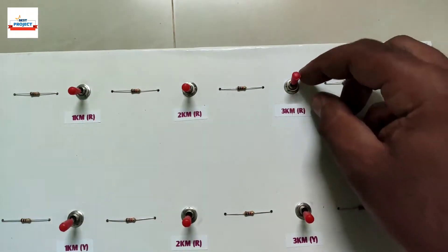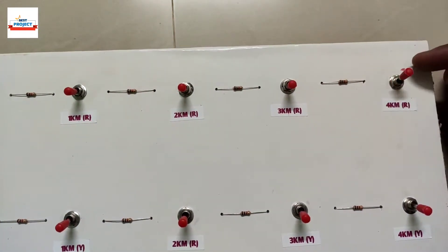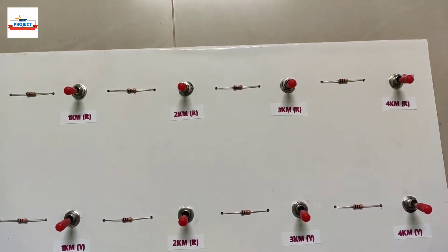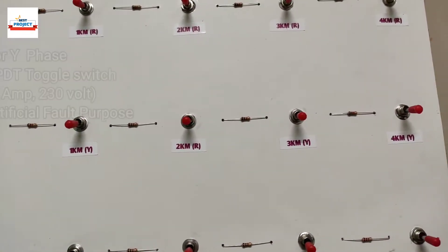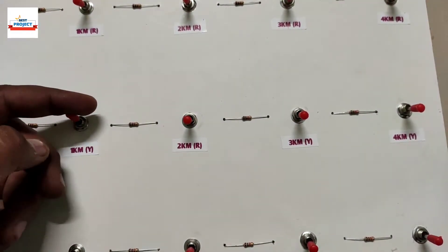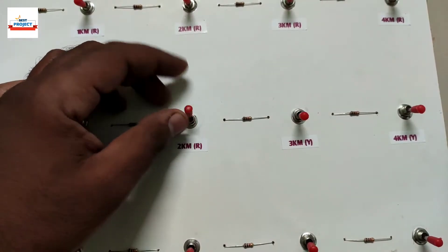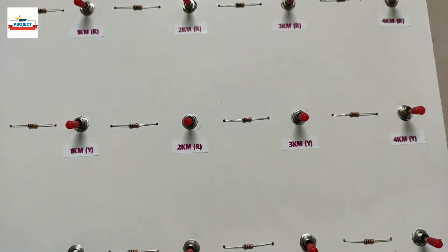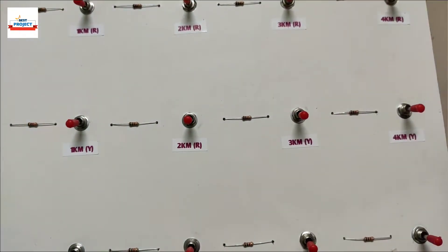This line has the artificial fault switches for Y phase. Y phase has the same sets of fault switches on one kilometer each from one kilometer to four kilometers. And also this line has the artificial fault switches for B phase.